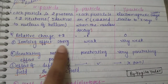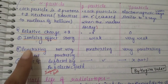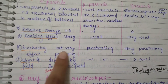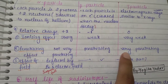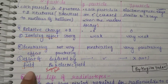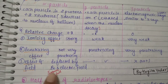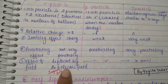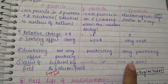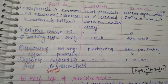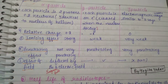Regarding ionizing effect: alpha has a strong ionizing effect, beta is weak, and gamma has a very weak ionizing effect. For penetration power, alpha is not very penetrating, beta is penetrating, and gamma is very highly penetrating. Alpha and beta particles are deflected by magnetic and electric fields, whereas gamma particles are not affected by magnetic or electric fields.